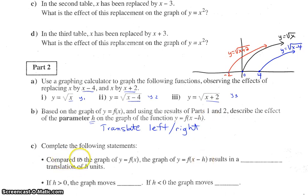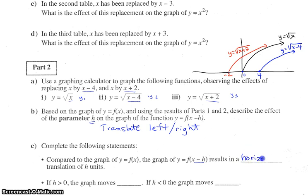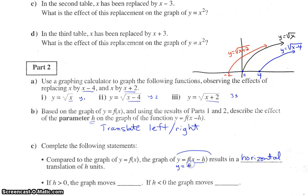Let's be a little more specific with these statements. Compared to the graph of y equals f of x, the graph of y equals f at x minus h results in a horizontal translation of h units. If h is greater than zero — so in this equation, if we put a value for h like two or four — that resulted in a shift right four.